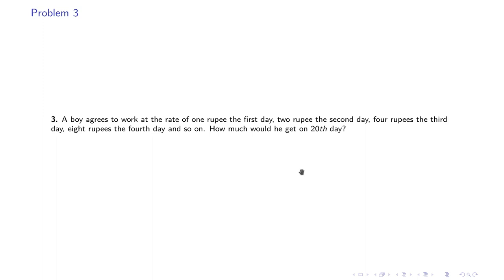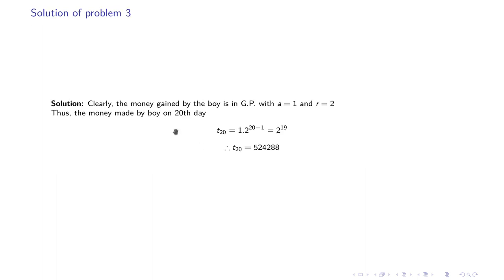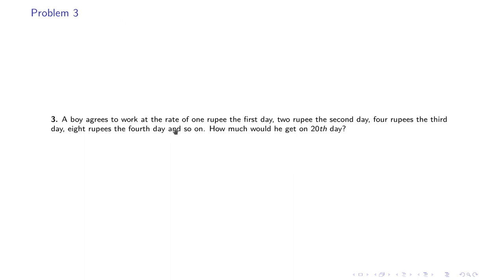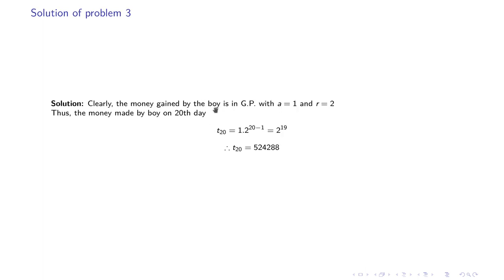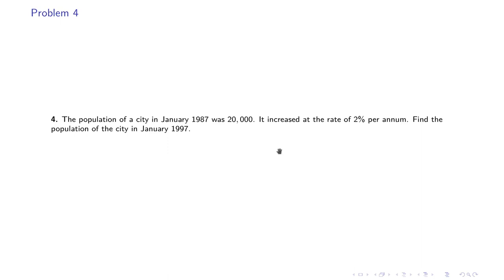The third problem: a boy works for 1 rupee the first day, 2 rupees the second day, 4 rupees the third day, 8 rupees the fourth day, and so on. How much would he get on the 20th day? Since the amount doubles each day, this is a GP with first term a = 1 and common ratio r = 2. So T_20 = 1·2^19 = 524,288 rupees.